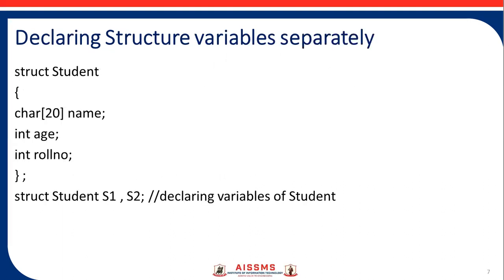Declaring structure variables separately: first, struct student, then char of 20 — the variable name is name — semicolon, int age, int roll_number. So age, roll_number, and name are the structure members. Then struct student S1, S2 — S1 and S2 are the variables declared for structure student.